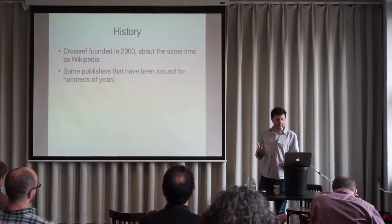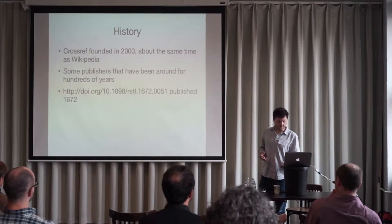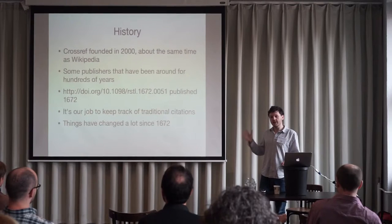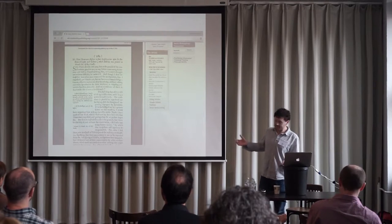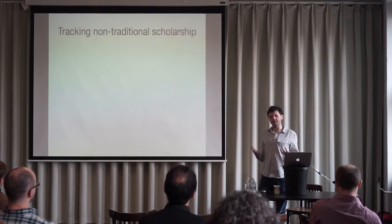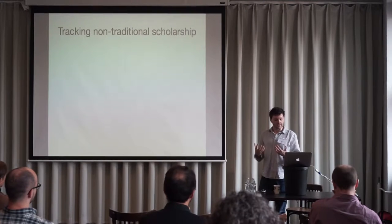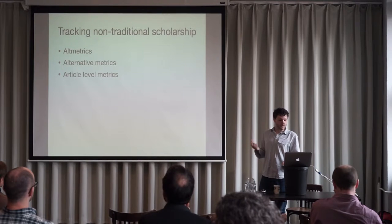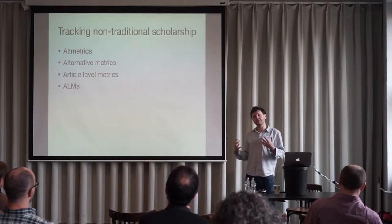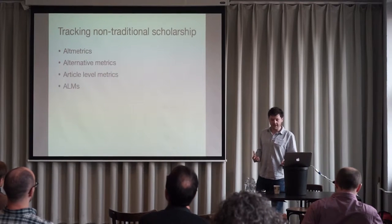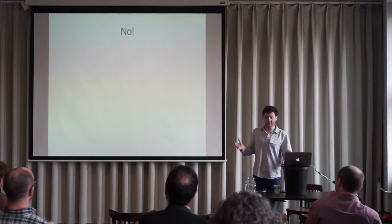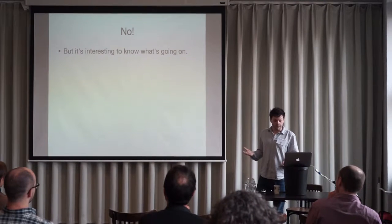Some publishers who are members of Crossref have been around for hundreds of years — this DOI was published in 1672. It's our job to keep track of all the traditional citations between papers, but things have changed a lot in publishing since then. This is Isaac Newton, and this is the DOI. There's a drive to track non-traditional forms of scholarship — this field is called Altmetrics, or Alternative Metrics, or Article Level Metrics — trying to create metrics on things beyond traditional citations and looking at how articles are used in the real world. Crossref isn't doing that, but it's interesting to know what's going on in the wild.